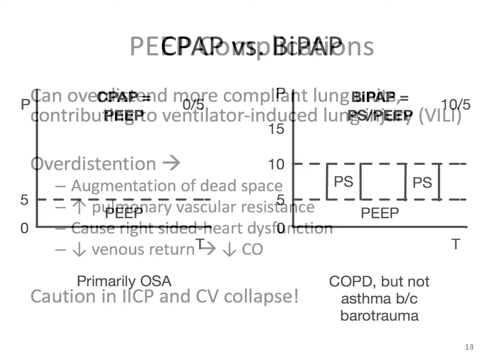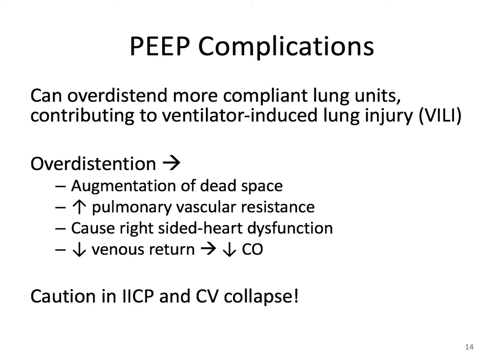PEEP is not all good; it comes with some complications. PEEP can overdistend more compliant lung units, contributing to ventilator-induced lung injury, or VILI. Overdistention results in augmentation of dead space, an increase in pulmonary vascular resistance, right-sided heart dysfunction, and decreased venous return — resulting in decreased cardiac output. This should be used cautiously in increased intracranial pressure and cardiovascular collapse. PEEP decreases venous return because the increase in intrathoracic pressure essentially squeezes the inferior and superior vena cava, lowering preload and ultimately decreasing cardiac output. Often, when you place a patient on PEEP, you'll see a transient decrease in blood pressure, but this should be monitored as it should not continue.